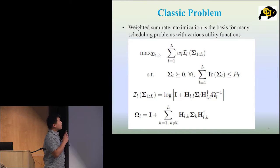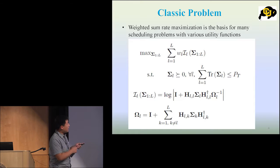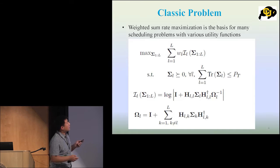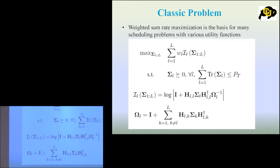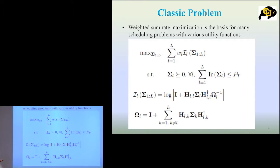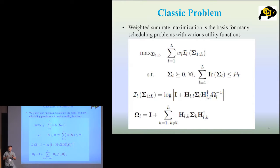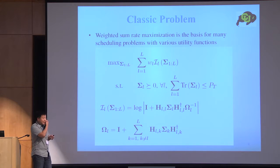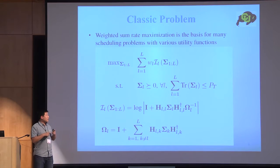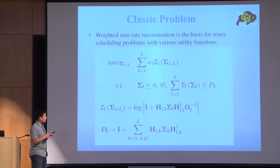It's a very classical problem: the weighted sum rate maximization. Our utility functions are the achievable rate of each transmission link, and we are subject to some constraints on sigma. Sigma is the covariance matrix of the transmitted signal. From communication theory, we know that the trace of sigma is the power that we send, so with this constraint we are limiting the total power we want to transmit.